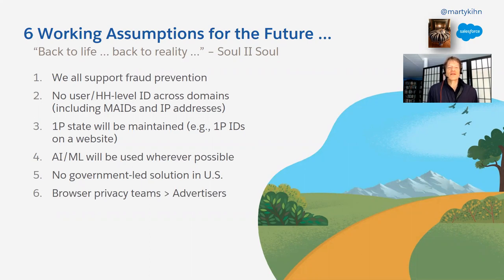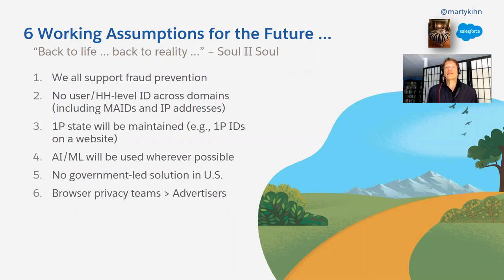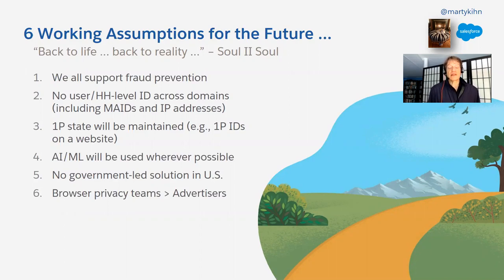Six working assumptions. Number one, everybody supports fraud prevention — there's nobody here who wants to let the bad guys win. Number two, no user household-level ID across domains, including MAIDs and IP addresses. It looks unlikely that some user-level ID will persist in browsers similar to a cookie. Even on mobile devices — mobile apps use a mobile ad ID, but those will probably go away at some point. IP addresses at the household level are also probably not workable.